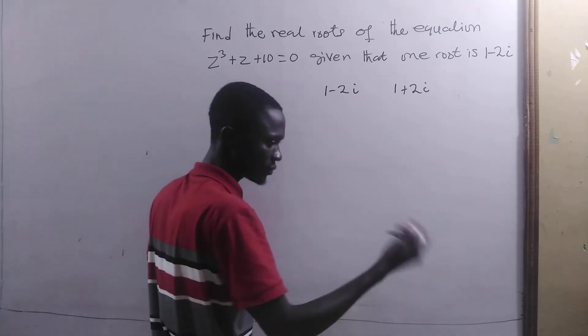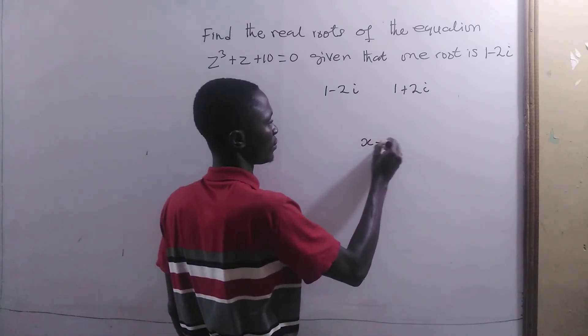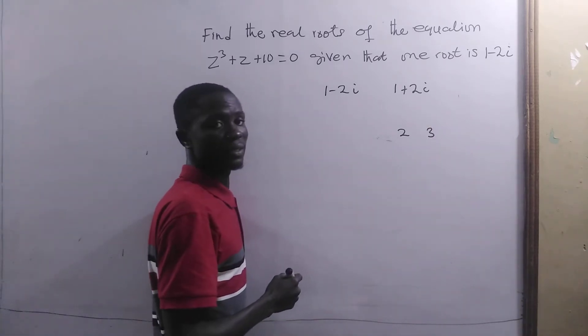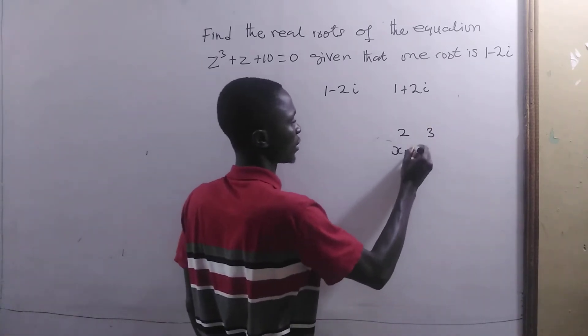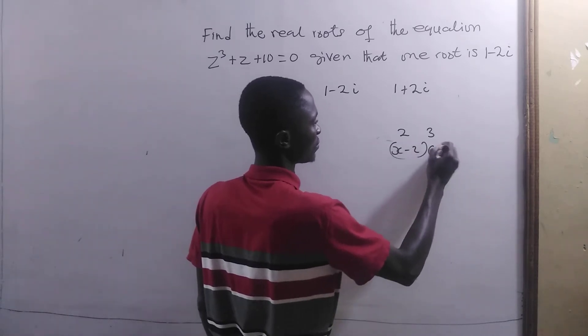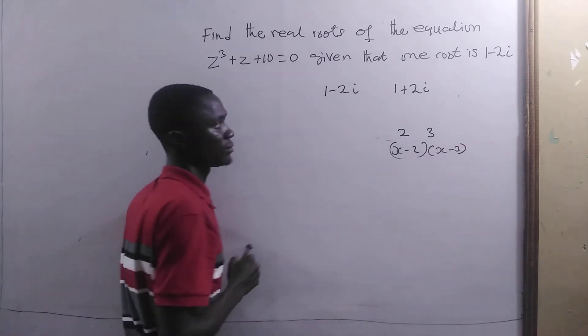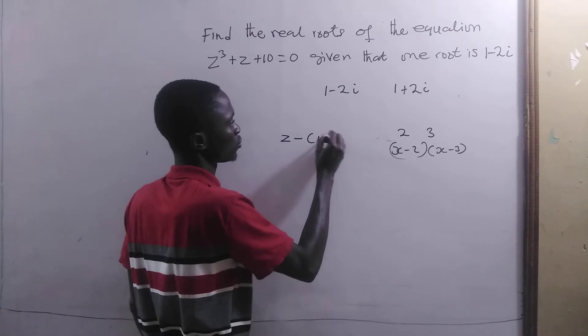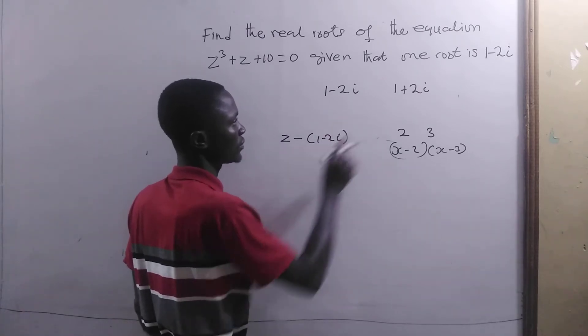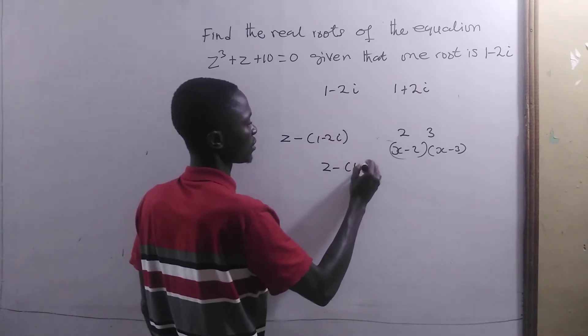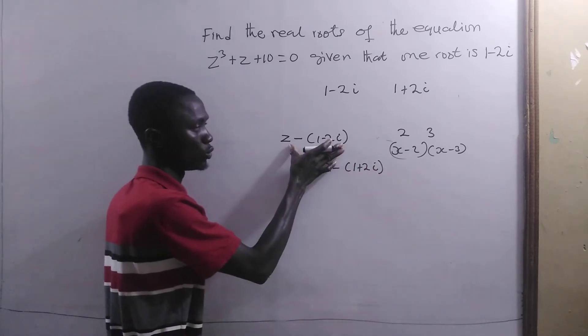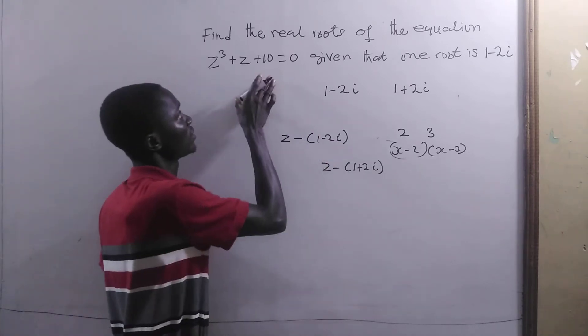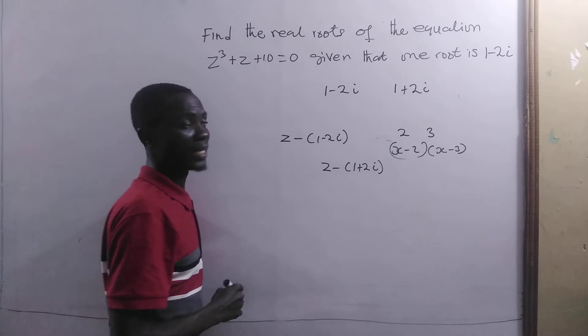If we have, let's say, 2 and 3 as roots of a given equation, then it means x - 2 times x - 3. Since we are dealing with complex numbers, we have z - (1 - 2i) and z - (1 + 2i) as the roots. So we are going to combine these together, and then we divide the product to get the other roots.